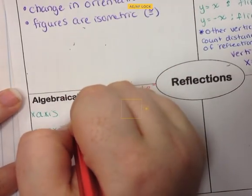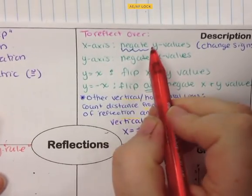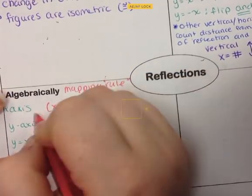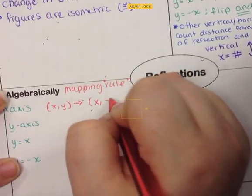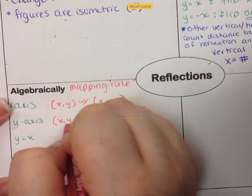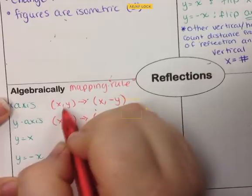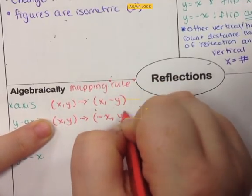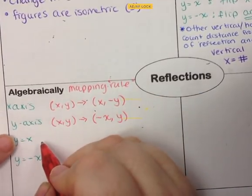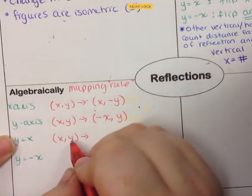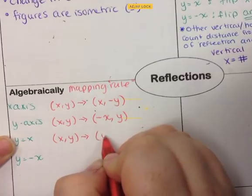Using our words, we can create the mapping rule. For the x-axis, we negate the y-values: (x, y) maps to (x, -y). The x-values aren't touched, but we change the sign of y — currently positive, now negative. For the y-axis, we negate the x-values: (x, y) maps to (-x, y). The y's aren't touched. For y equals x, we flip the x and y values: (x, y) maps to (y, x) — instead of x first, we have y first.